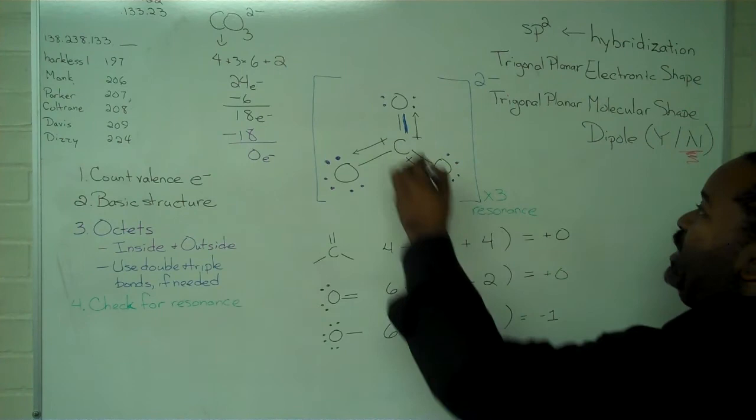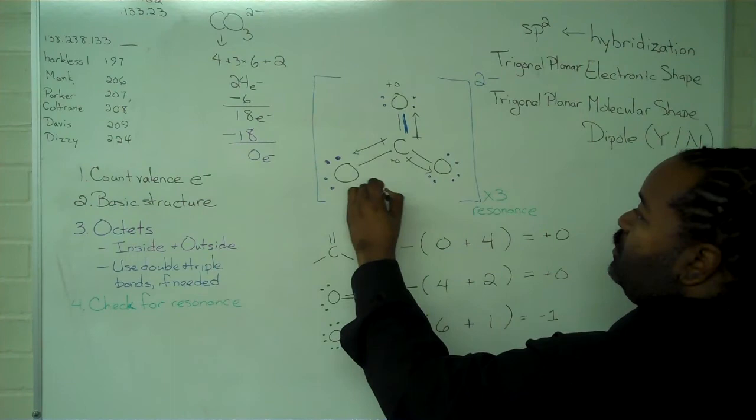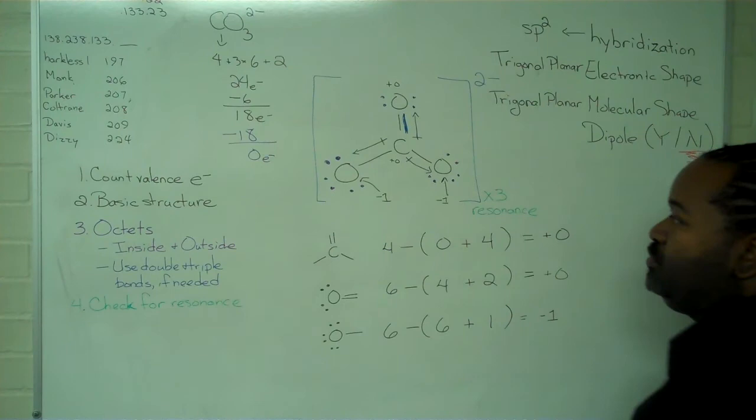So we can go back into the structure and actually write these values down. Zero here, a zero here. This one has a negative one. And this one will have a negative one.